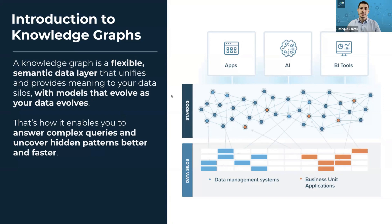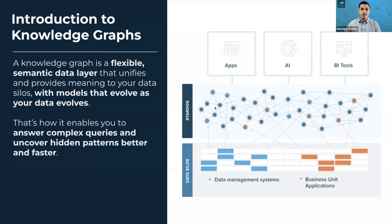This way you can use your data in apps, run AI tools, or use BI tools such as Power BI or Tableau. The best part is that you can have more than one model with the same data silos, and this model can evolve as your data evolves. Different departments can access the data with different models suited to their use case, and you'll answer complex queries and uncover hidden patterns better and faster.